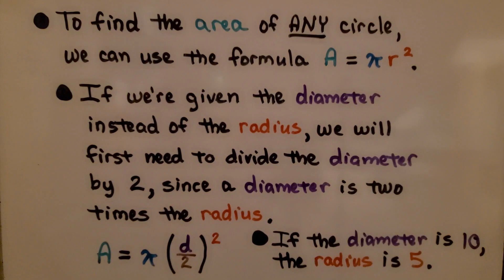To find the area of any circle, we can use the formula A equals pi r squared. If we're given the diameter instead of the radius, we'll first need to divide the diameter by 2, since the diameter is 2 times the radius.